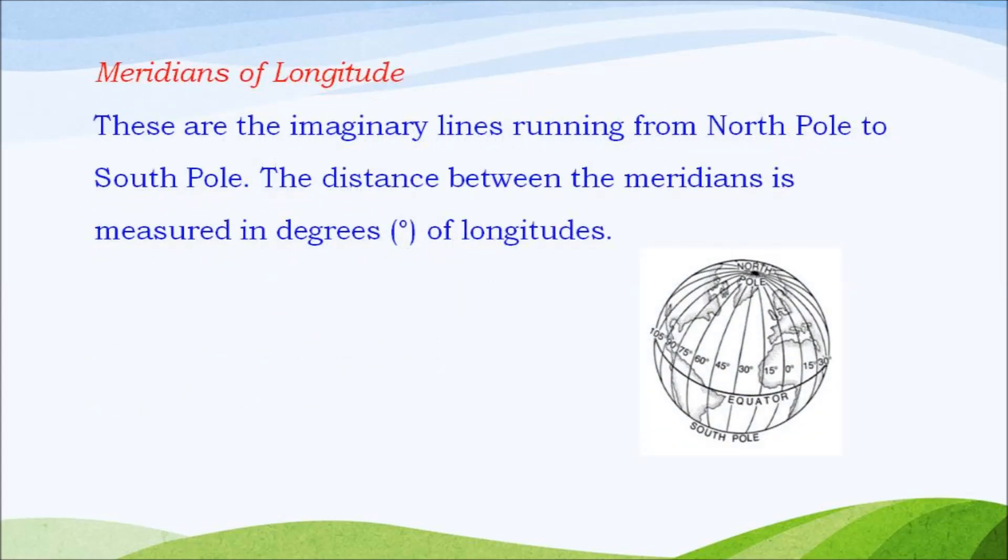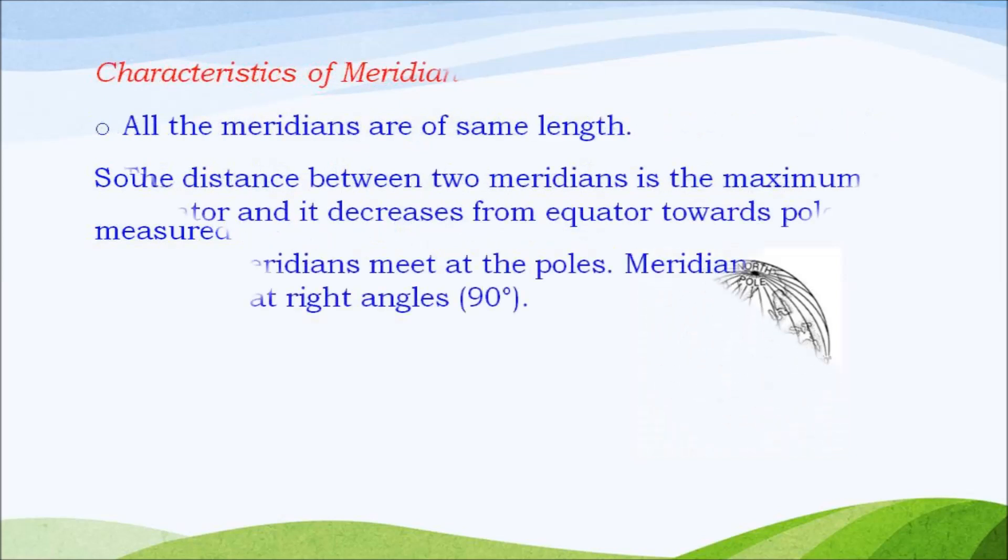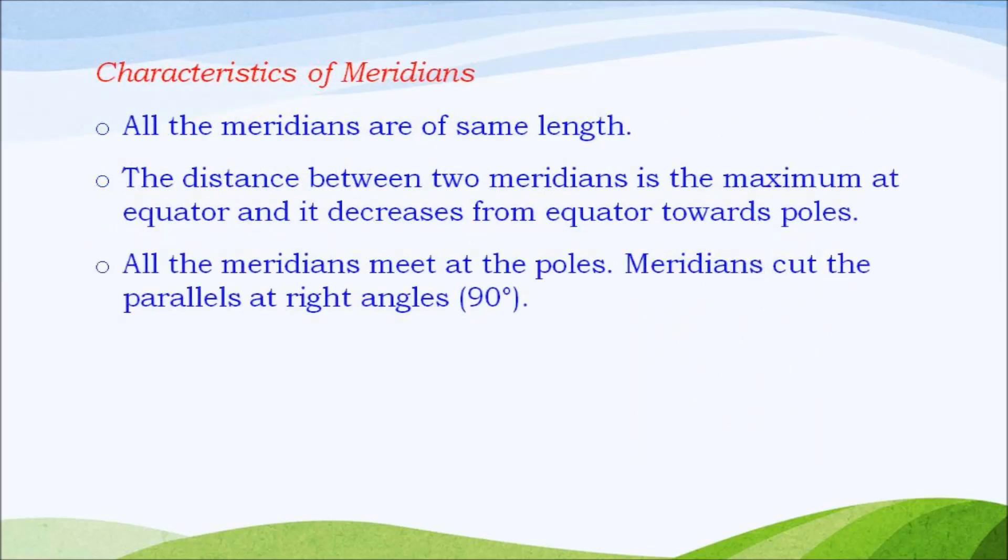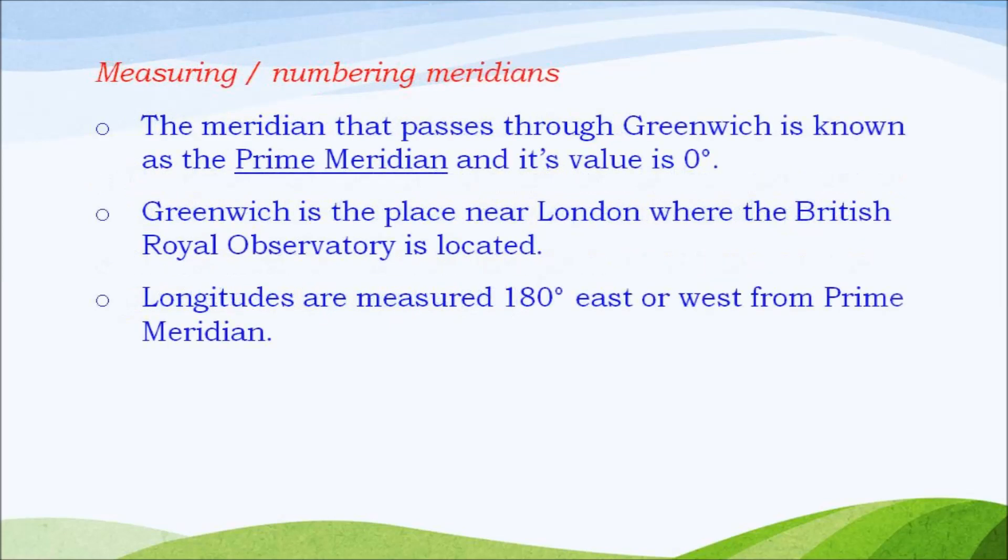Meridians of latitudes. These are the imaginary lines running from north pole to south pole. The distance between the two meridians is maximum at equator and it decreases from equator towards poles. All the meridians meet at the poles. Meridians cut the parallels at right angles, i.e. 90 degrees.